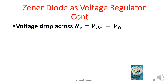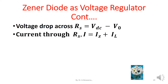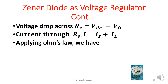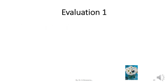The voltage drop across R_S equals V_DC minus V_0. The current through R_S is I, which equals I_Z plus I_L. Applying Ohm's law: R_S equals (V_DC minus V_0) divided by (I_Z plus I_L). So far we have discussed the Zener diode, its V-A characteristics, and the application of the Zener diode as a voltage regulator.